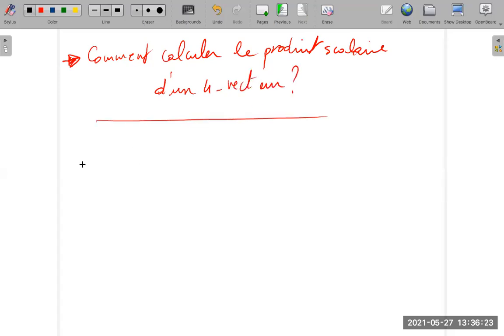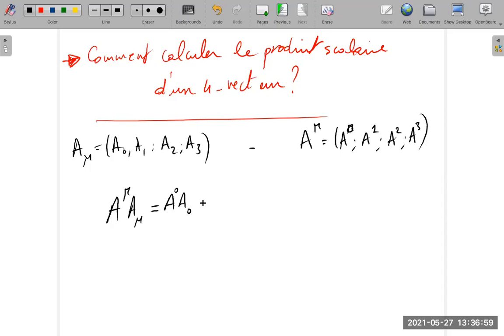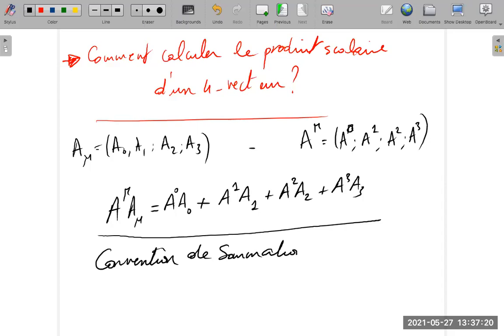In fact, since we have A_mu, we have A_0, A_1, A_2, A_3, which form the contravariant A_mu. So A_mu times A_mu, by the convention, is A_0 times A_0 plus A_1 A_1 plus A_2 A_2 plus A_3 A_3. This form is called the summation convention of Einstein.